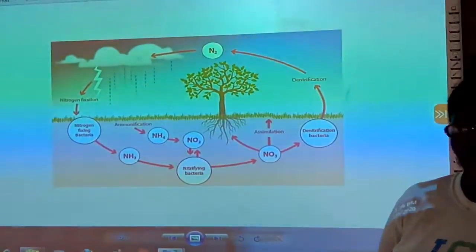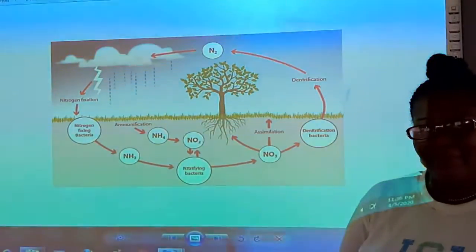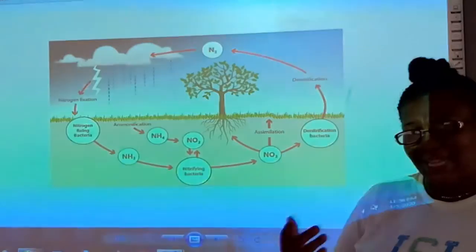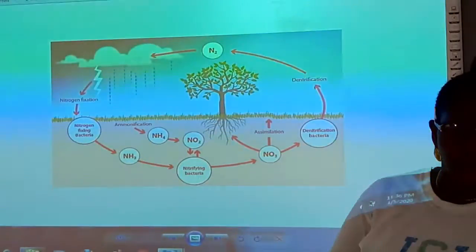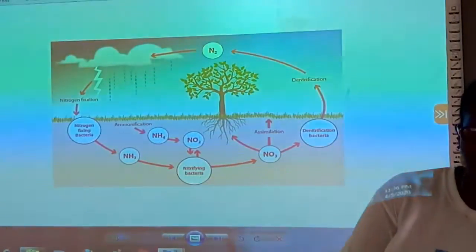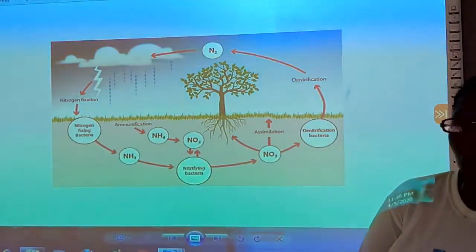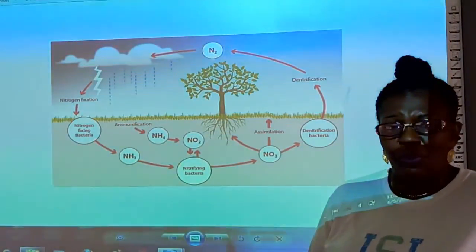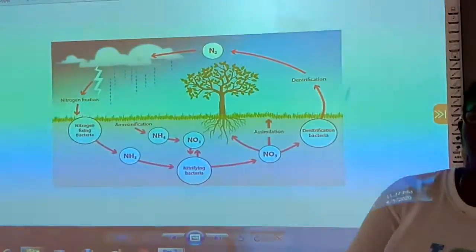The third stage is that this ammonia will now be converted to nitrates. This is in two stages. The first stage, the ammonia will be converted to nitrites with the help of some bacteria called nitrosomonas.